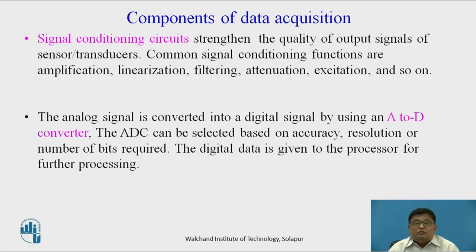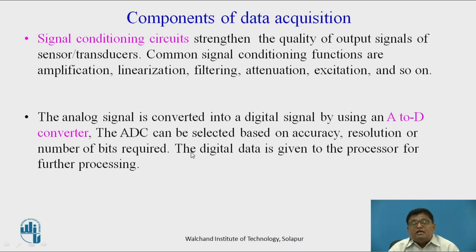The analog signal is converted into a digital signal using an analog-to-digital converter. The ADC can be selected based on the required accuracy, resolution, and number of bits. This digital data is then given to the processor for further processing.